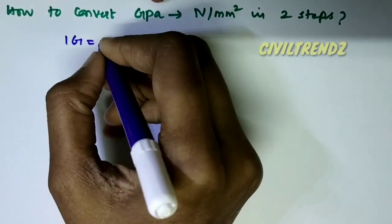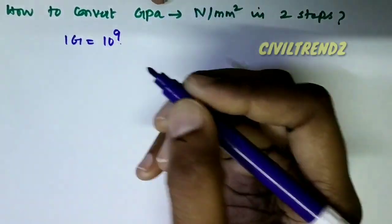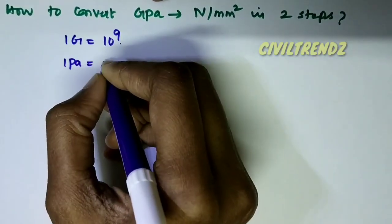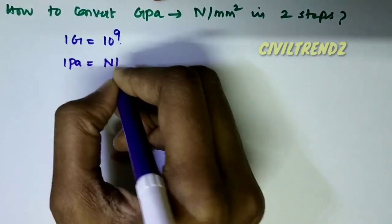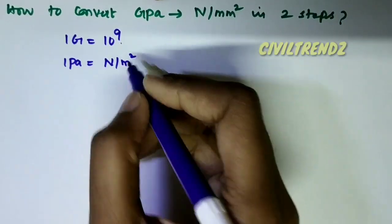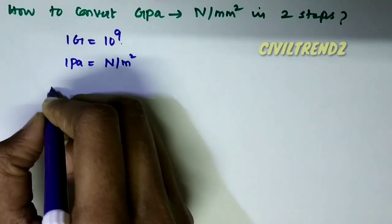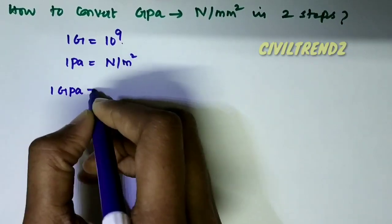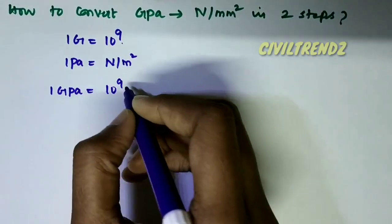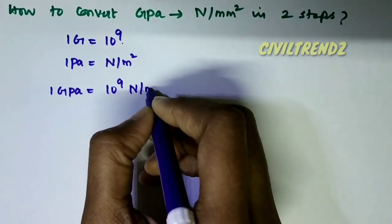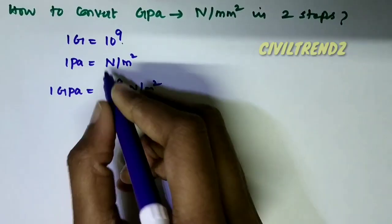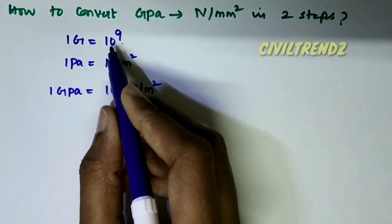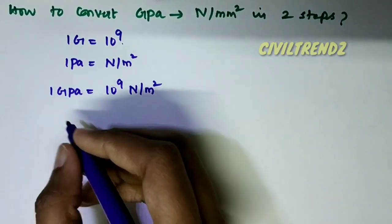1 giga is equal to 10 power 9. 1 pascal is equal to Newton per m². Therefore, 1 gigapascal is equal to 10 power 9 Newton per m².